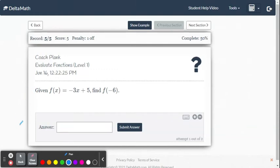This video provides some examples for evaluating functions at level one within the DeltaMath online system. We're given f of x equals negative three x plus five. It says find f of negative six.